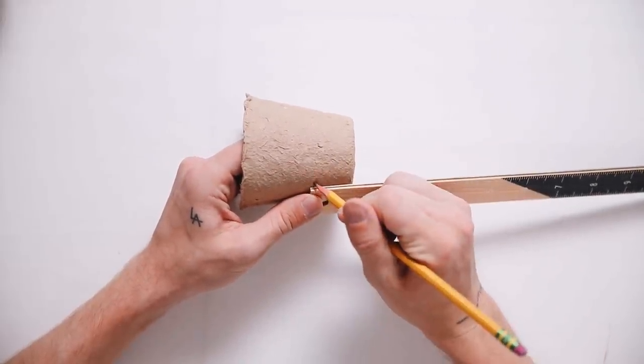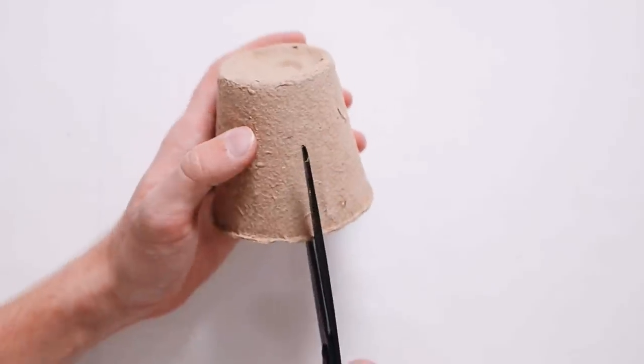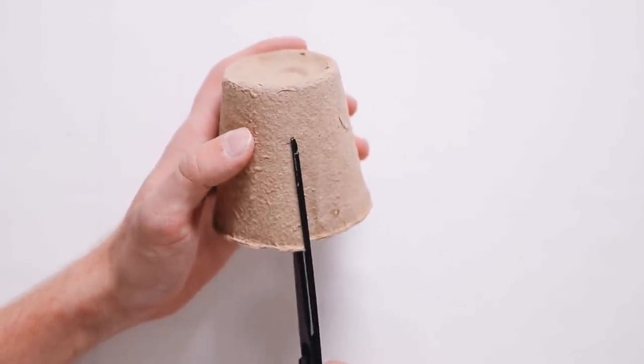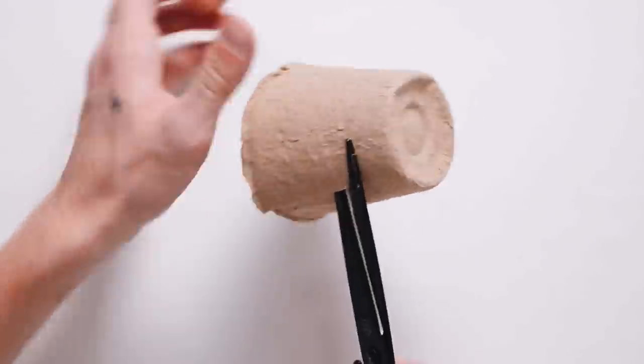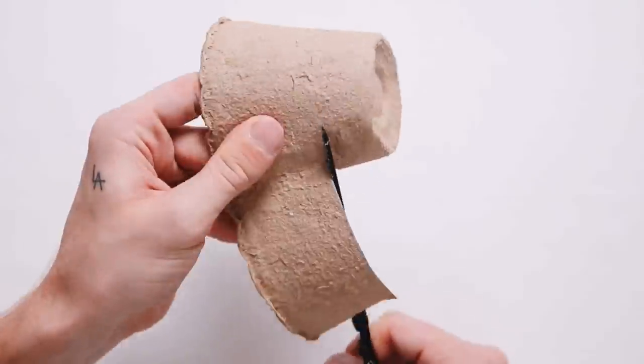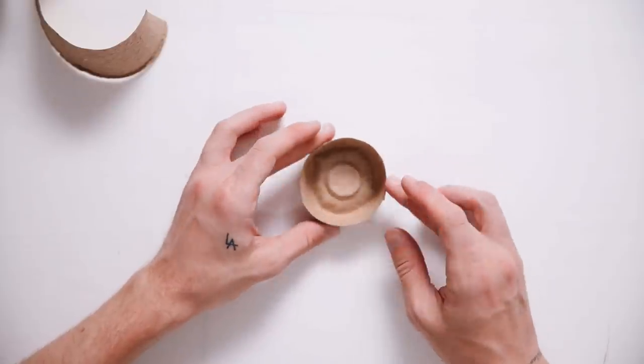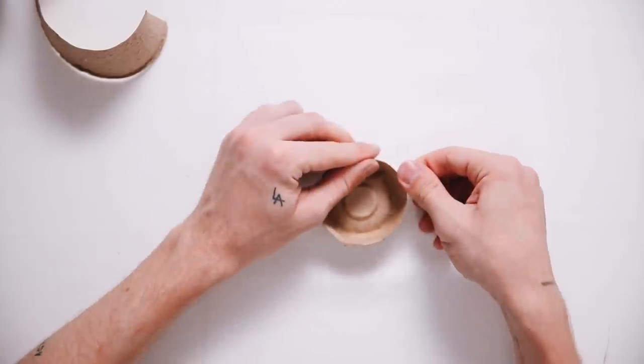A couple marks around the edge just so I have a guide for when I'm going in and using a pair of scissors. I'm cutting down to that one inch mark and then I'm going to cut all the way around just as evenly as possible. It doesn't have to be perfect, but I just tried to make it as even as possible. And the more marks you do, the more even it's going to be.